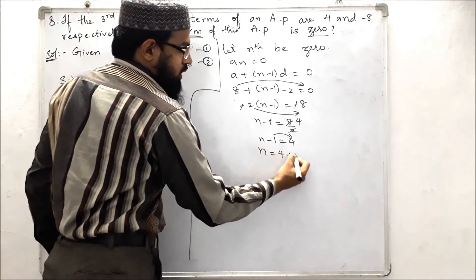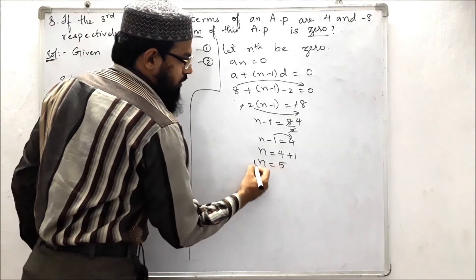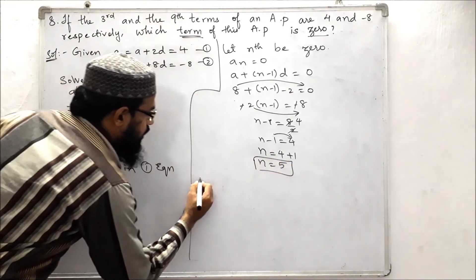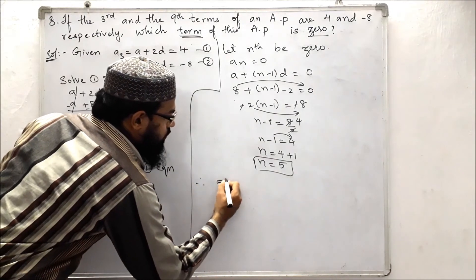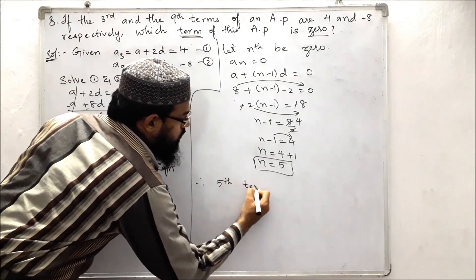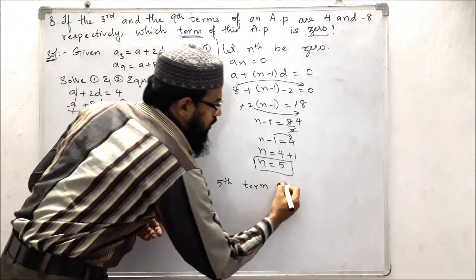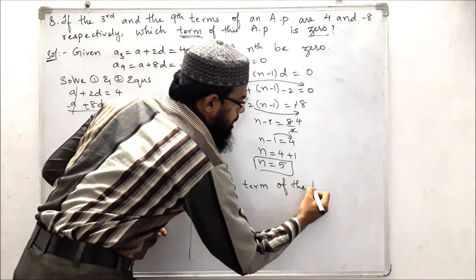Minus 1 goes to that side. N is equals to 4 plus 1, that is 5. Therefore, the fifth term of the AP is 0.